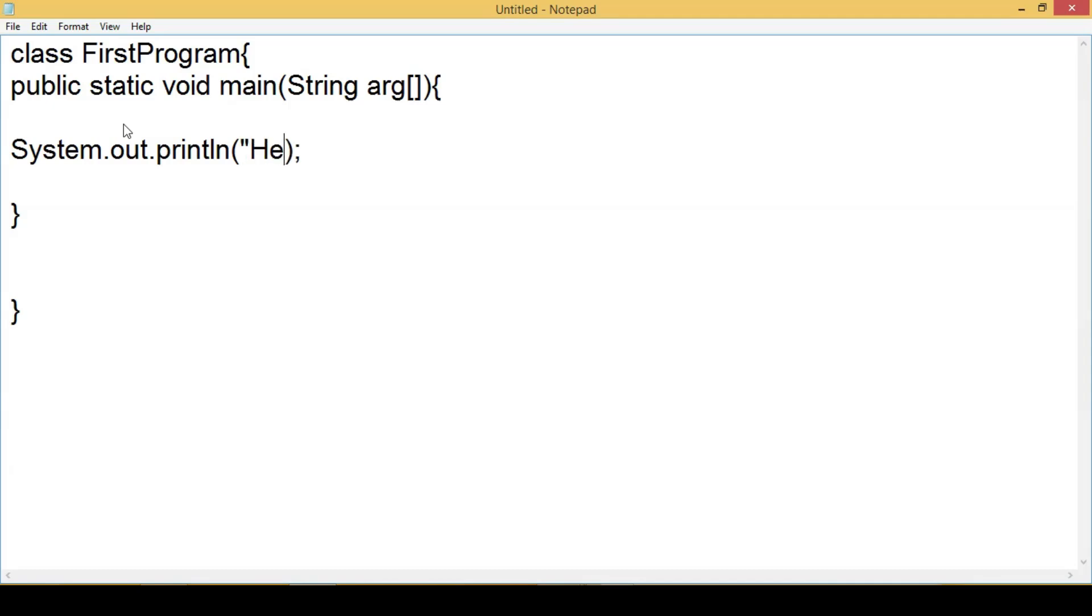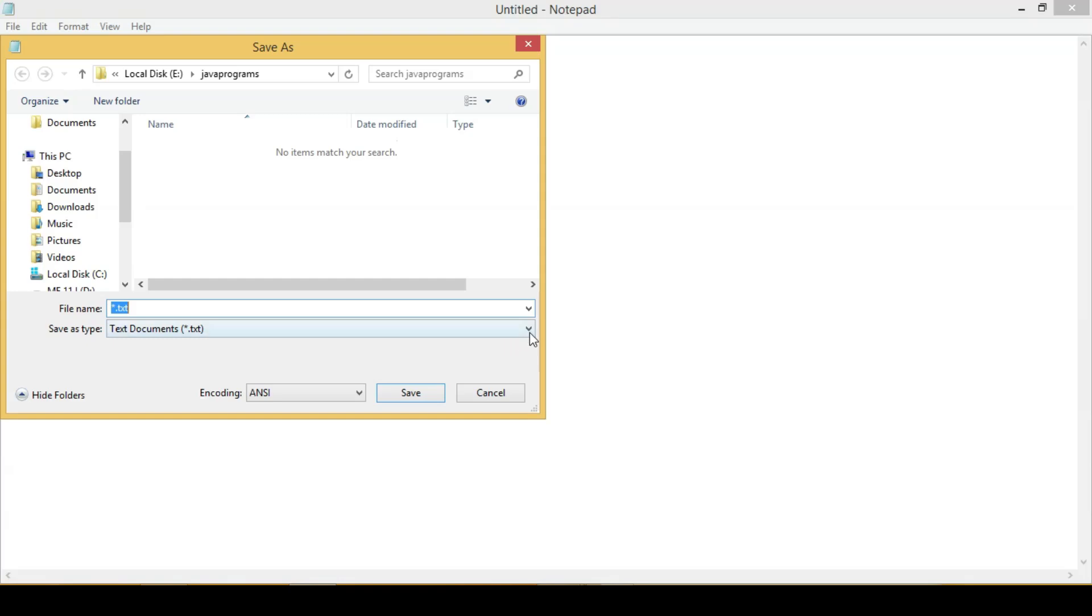This program simply prints Hello, I can say Hello World. Click Save. Save this file with the name of the class name. Save it using the extension .java.